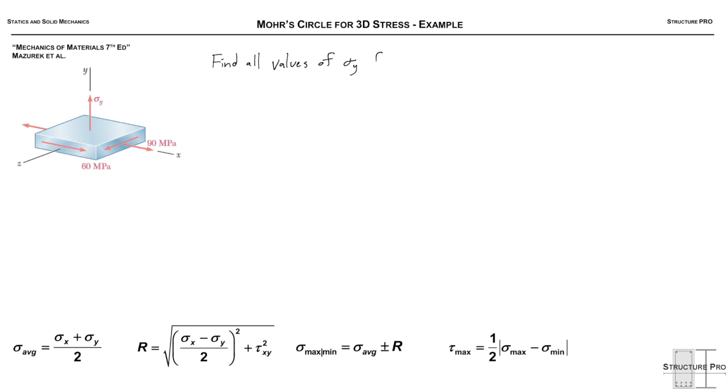So here's an example from this mechanics of materials textbook that I'm using every so often. We're just asked to find all the values of Sigma Y for which tau max is 80 MPa, and we're going to use the 3D Mohr's circle for this.